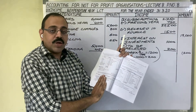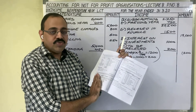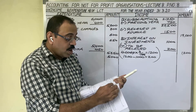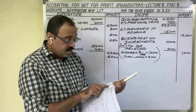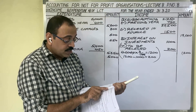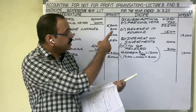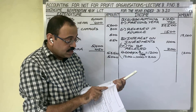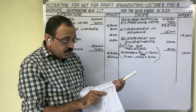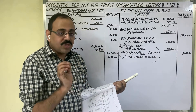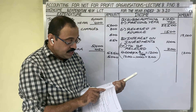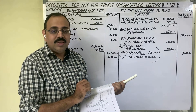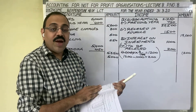Let us verify all adjustments have been addressed. First, subscriptions received in advance — completed. Second, outstanding rent — done. Third, interest on investments adjustment — completed. Fourth, donations received for prize fund — considered. All four adjustments are accounted for.